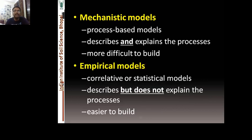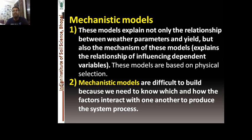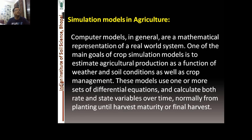Characteristics of mechanistic models: they are process-based and they describe and explain processes. They are more difficult to build than empirical (correlative or statistical) models, which only describe but do not explain processes. Mechanistic models explain not only the relationship between parameters such as yield, but also the underlying mechanisms. They describe relationships among influencing and dependent variables, are based on physical and biological principles, and require knowledge of how factors interact to produce system processes.